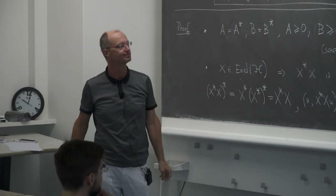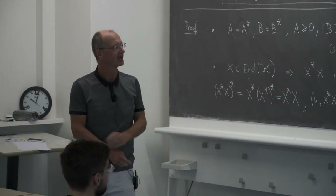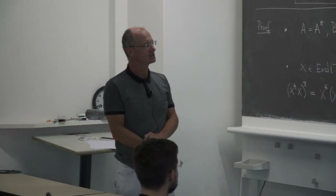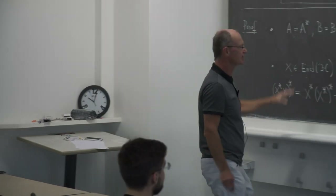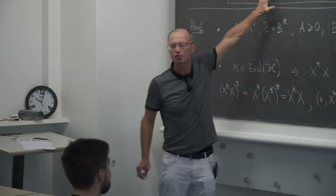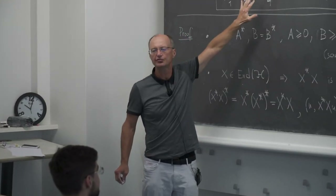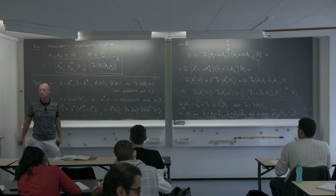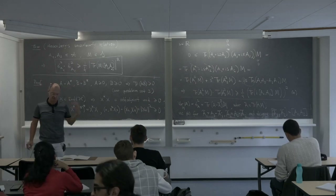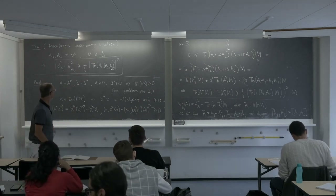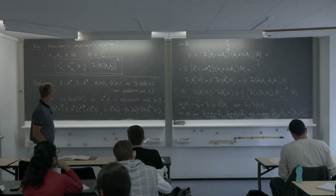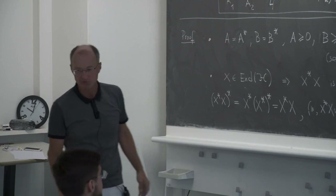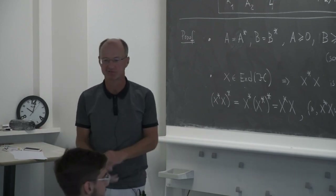The correct factor is indeed 1/4. If you take the square root, you get 1/2. Let us take a break, and then we will discuss the Heisenberg uncertainty more.